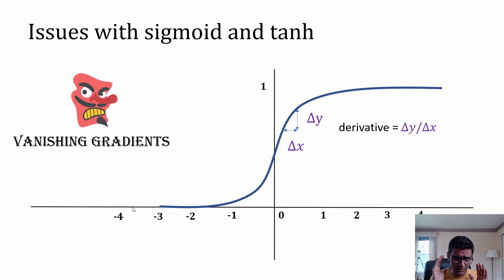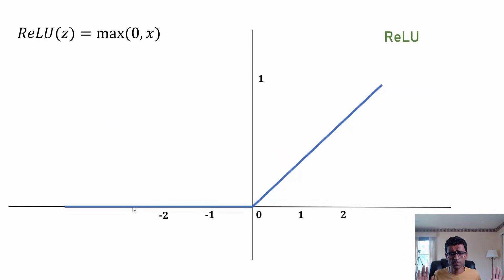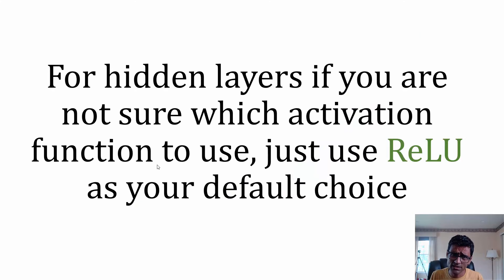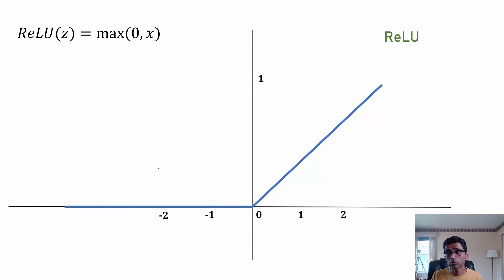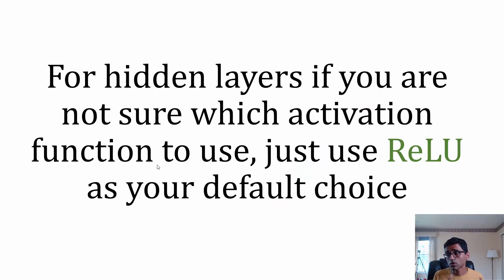Sigmoid and tanh both have the vanishing gradient problem. For that reason, a new function called ReLU was introduced. ReLU is extremely simple: if the input value is less than 0, the output is 0; if it is greater than 0, the output equals the input value. ReLU is the most popularly used function for hidden layers because it is computationally very lightweight. If you're unsure which function to use for hidden layers, always go with ReLU as your default choice.